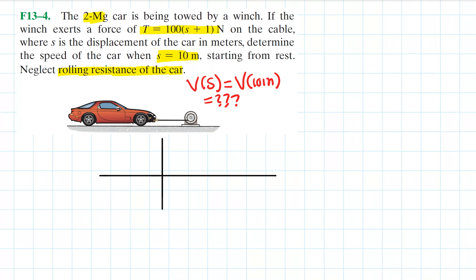Next we draw the free body diagram and define our axes. The horizontal axis is parallel to the surface and the vertical axis is perpendicular to the surface. The positive x-direction is the direction in which the vehicle is moving — the car is moving to the right because the winch is pulling it to the right. We represent the vehicle as a particle.